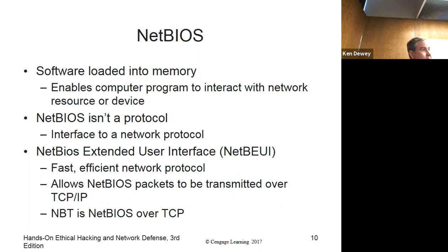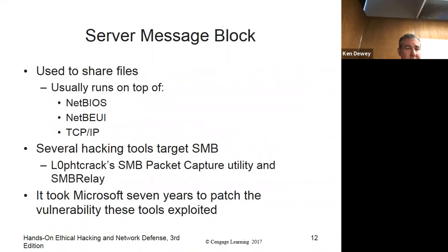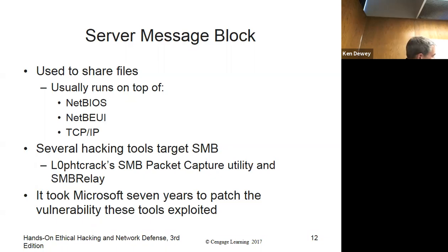NetBIOS is still there and still being used, although not as much as it was. We're pretty much doing it all over TCP/IP now — NBT is NetBIOS over TCP, which is what we really do nowadays. Systems running Windows can share files and resources using NetBIOS; it's still backwards compatible, so it's going to be around for a while. SMB is basically the same thing — it shares files, works with NetBIOS and TCP/IP. It also gives you the ability to connect Linux systems to Windows, making Linux simulate a Windows machine. Mac does the same. It took them seven years to patch a vulnerability in it.